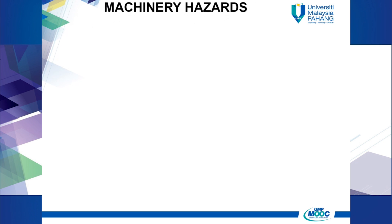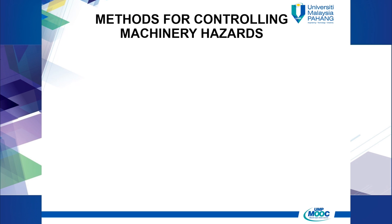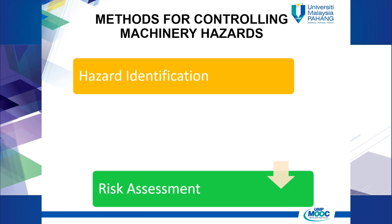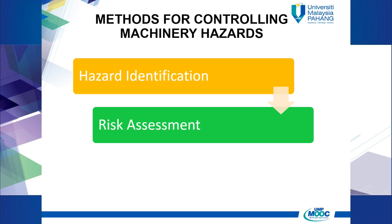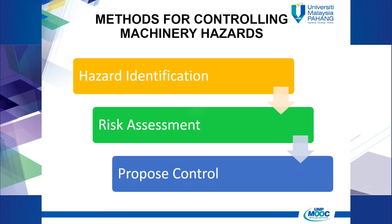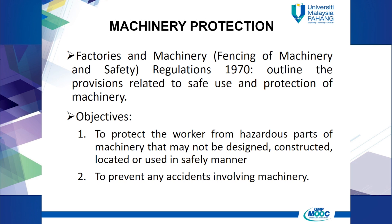The basic method for determining the control of machinery hazards is similar to other hazards. First, you have to identify the hazards. Second, conduct the risk assessment. Third, propose controls based on the level of risk.